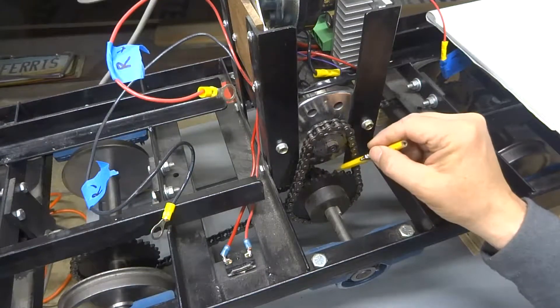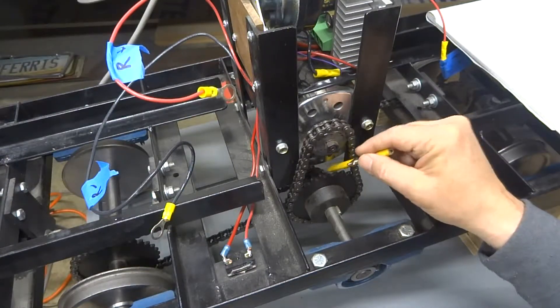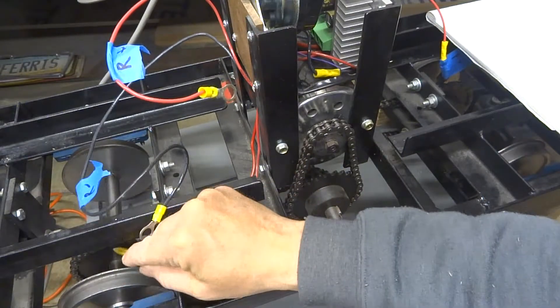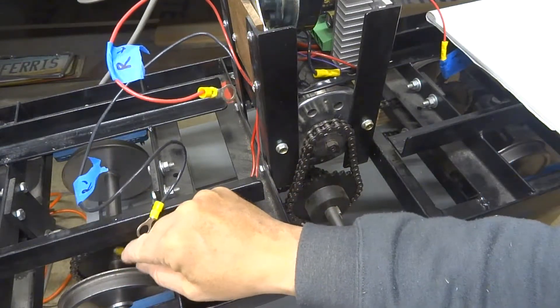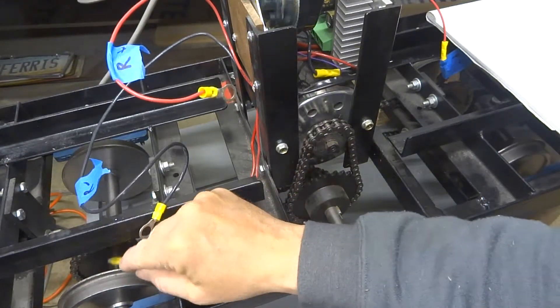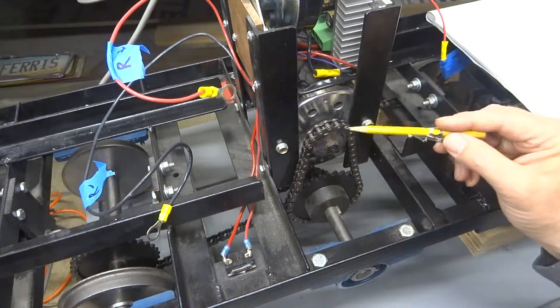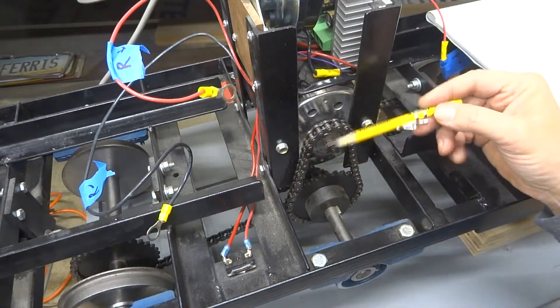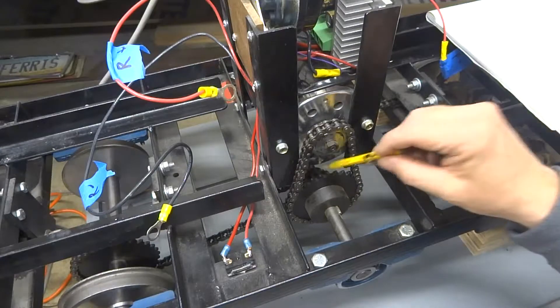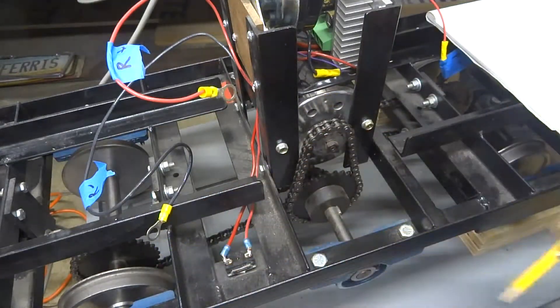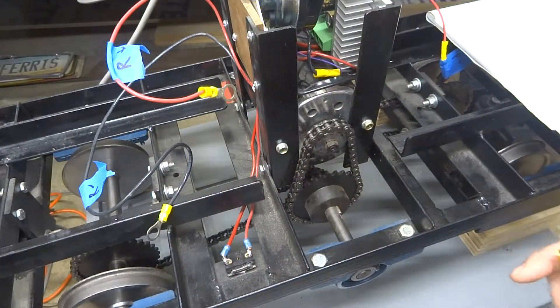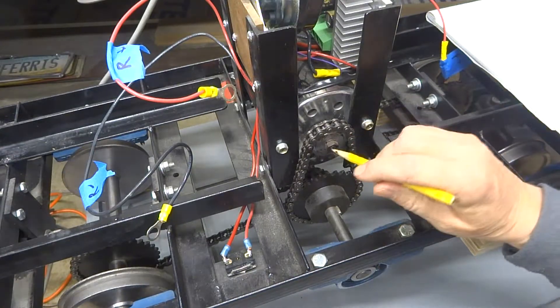Over here on each axle there are sprockets that are 30-tooth, same size as this. So when we go 1 to 2, and then we go 11 to 30, that gives us the same gear ratio as if we had from this 15-tooth all the way up to a large diameter sprocket with 80 or 90 teeth on it.